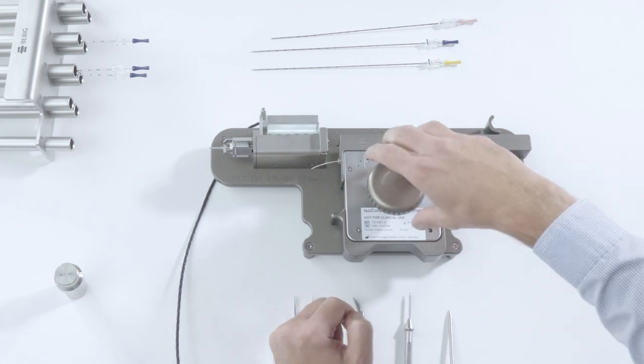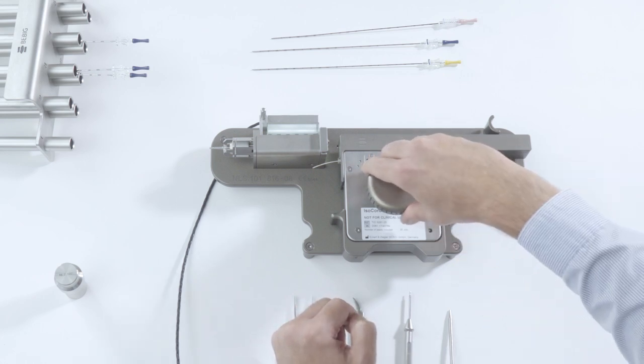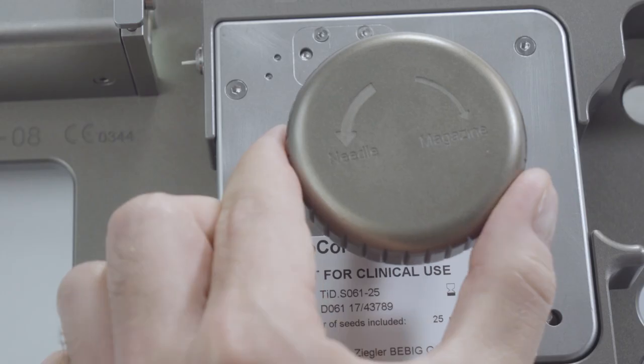Turn the knob clockwise in the direction marked magazine until the end of the seed chain is flush with the magazine holder.